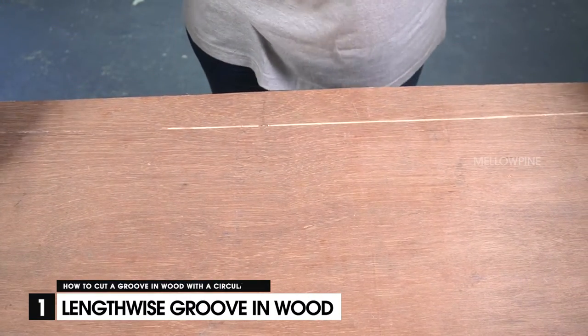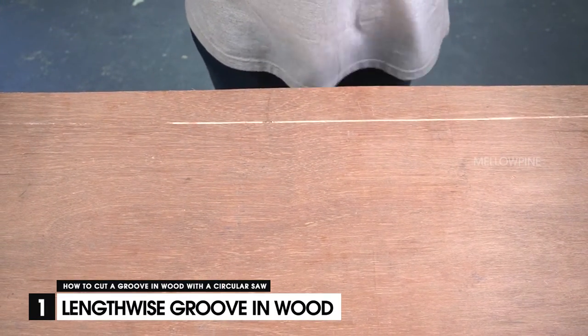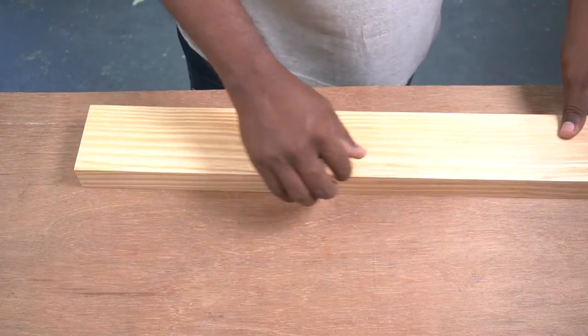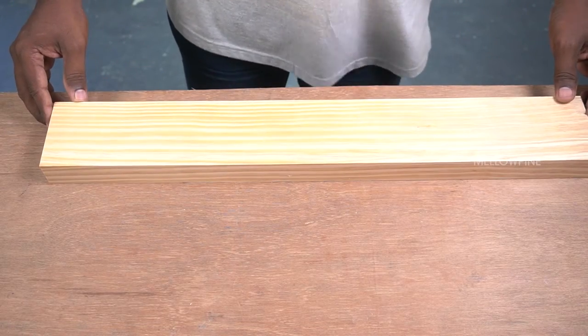To cut a lengthwise groove, first place a sacrificial board on your work table. Next, place the wood to be cut on the sacrificial board.